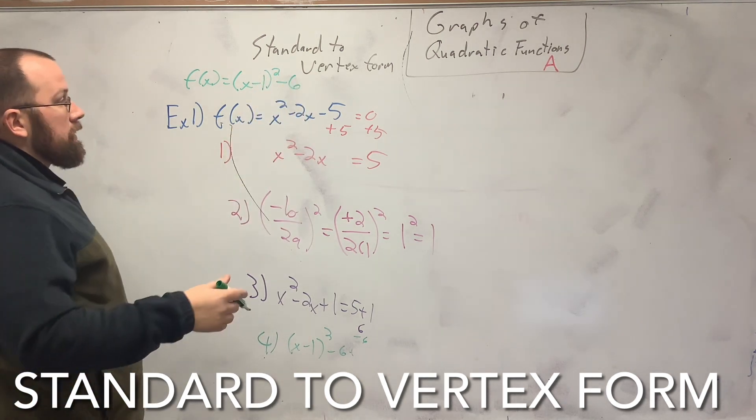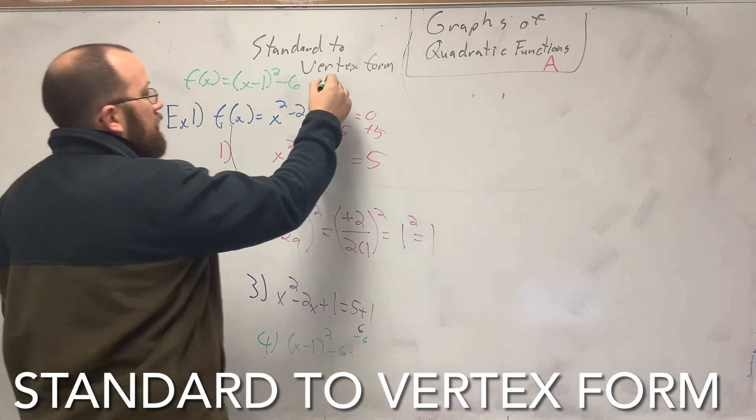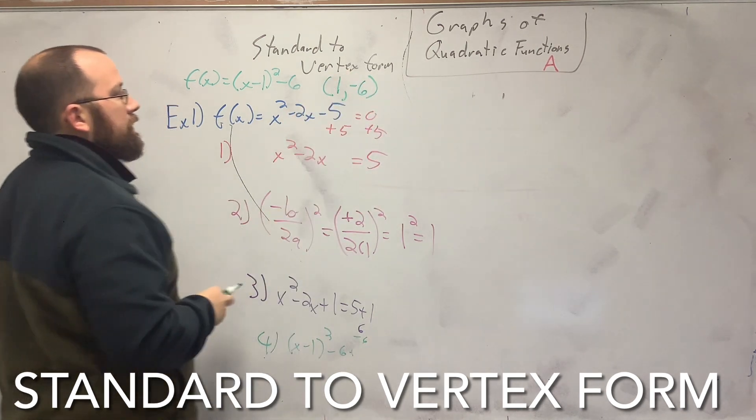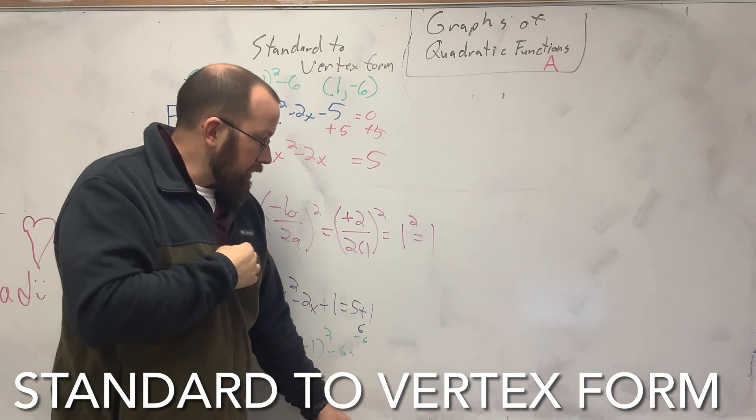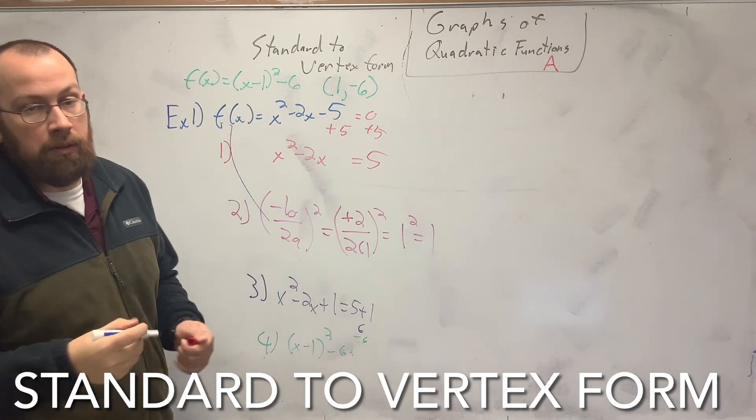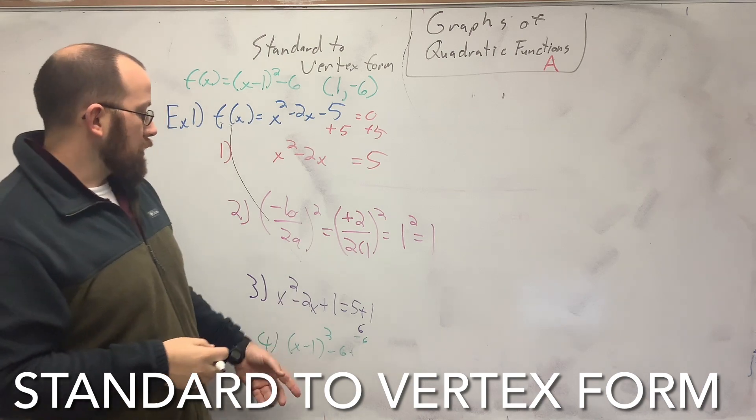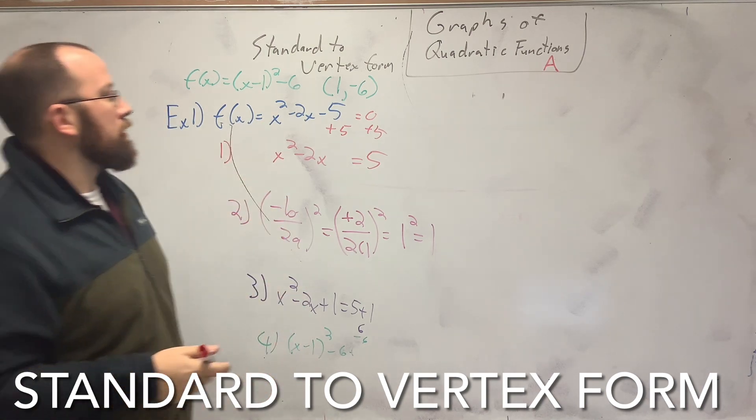And that means your vertex is (1, negative 6). Now the other part of this is being able to go backwards too. So how do I go from vertex to standard form?